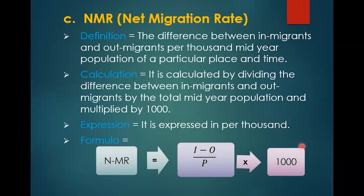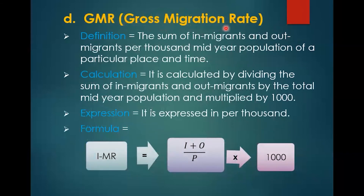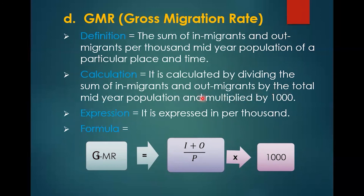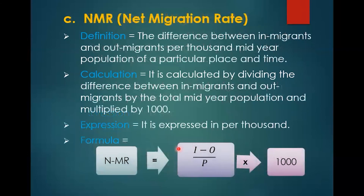The last measure is Gross Migration Rate. The formula is: GMR = ((I + O) / P) × 1000. The sum of in-migrants and out-migrants per thousand mid-year population of a particular place and time is called Gross Migration Rate. In Net Migration Rate we subtract in-migrants and out-migrants; here we add them. Please remember this difference.